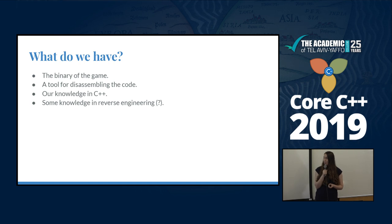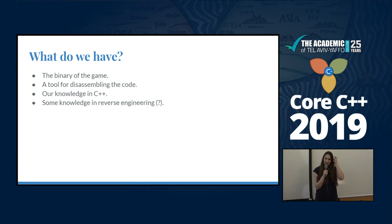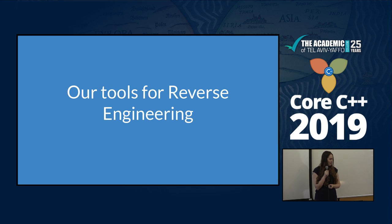What do we have? We have the binary of the game, we have a tool for disassembling the code, we have the knowledge we have in C++, and we maybe have some knowledge in reverse engineering that we want to use. Let's start with the tools that we have for reverse engineers to understand the code.